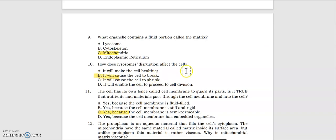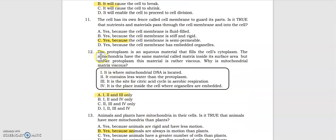Number nine: What organelle contains a fluid portion called the matrix? It's mitochondria. Number ten: How does lysosome disruption affect the cell? It will cause the cell to break. Number eleven: The cell has its own fence called cell membrane to guard its parts. Is it true that nutrients and materials pass through the cell membrane and into the cell? The answer is yes, because the cell membrane is semi-permeable.